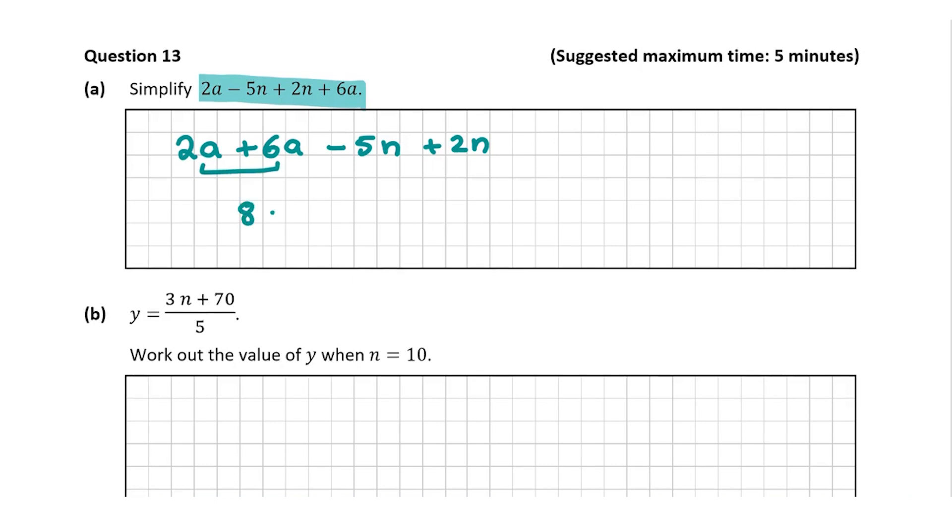So 2a plus 6a we can do, that's 8a. Minus 5n plus 2n we can do, that's minus 3n. So this is our answer for question A. That's as far as we can simplify it, 8a minus 3n.